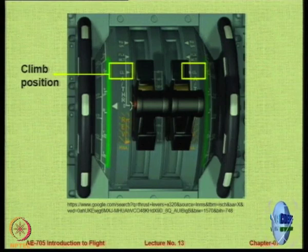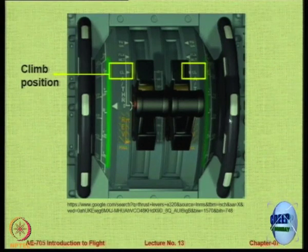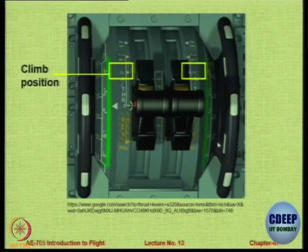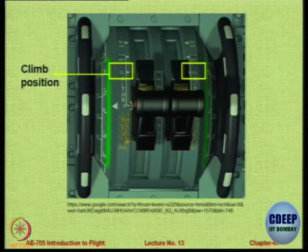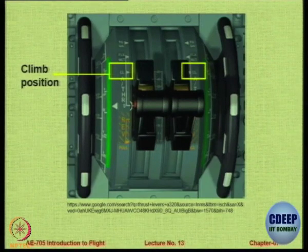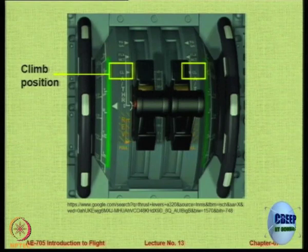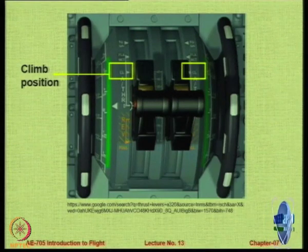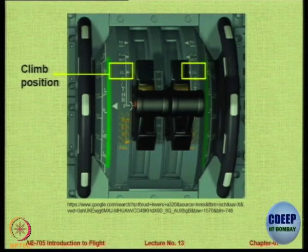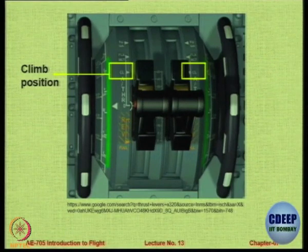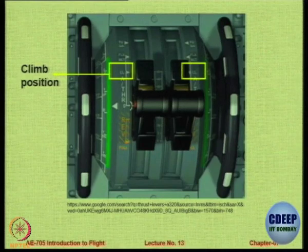To give some context, the two wheels on the right and left of the throttle quadrant are trimming wheels, used to trim the aircraft so the pilot can fly hands-free. They ensure the net moment is zero. The two main levers are the throttles, which have a reverse position marked in yellow, then climb position, then cruise position, and so on.